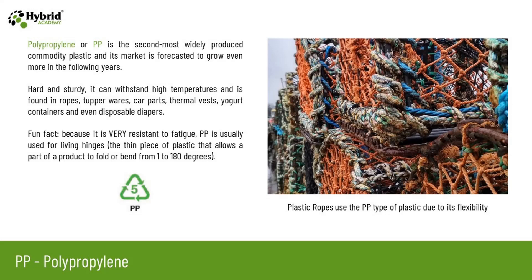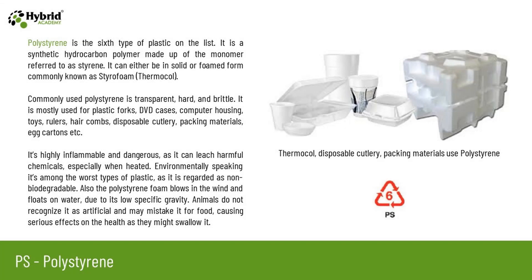Polypropylene, or PP, is the second most widely produced commodity plastic and its market is forecasted to grow even more. Hard and sturdy, it can withstand high temperatures and is found in ropes, tupperwares, car parts, thermal vests, yogurt containers, and even disposable diapers. Because it is very resistant to fatigue, PP is usually used for living hinges — the thin piece of plastic that allows a part of a product to fold or bend from 1 to 180 degrees.